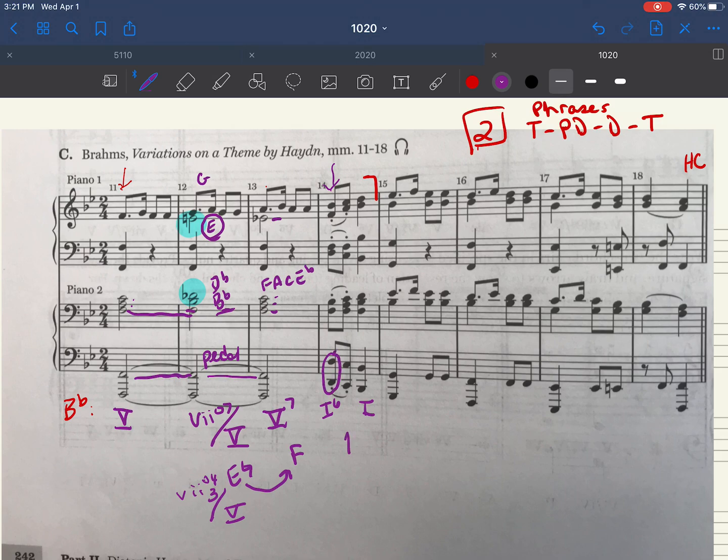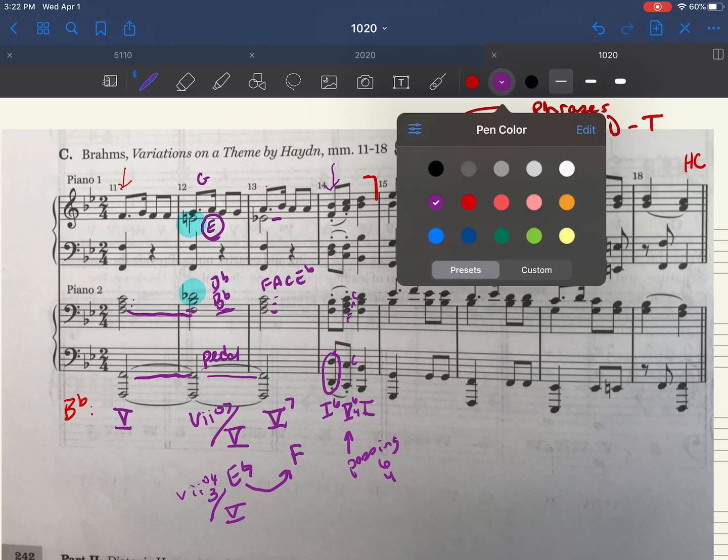The chord in the middle is F, A, C with a C in the bass. F, A, C is five and the fifth of the chord is in the bass making this a second inversion chord. This is a passing 6-4.